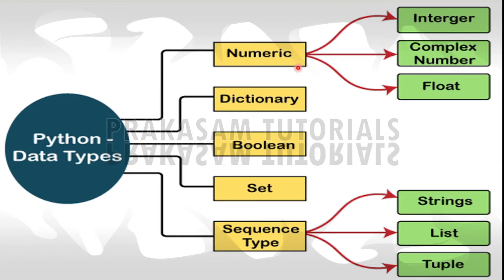Numeric data type is further divided into integer, complex number, and float number. And sequence data type is further divided into string data type, list data type, and tuple data type.